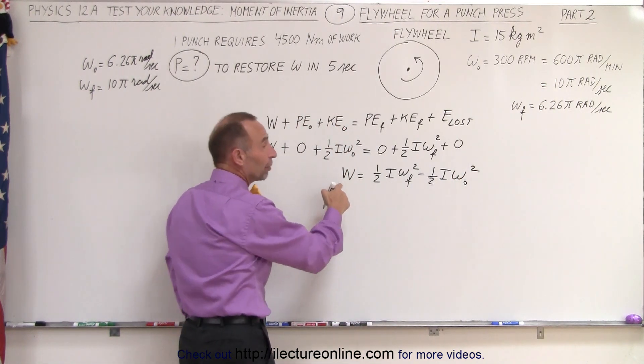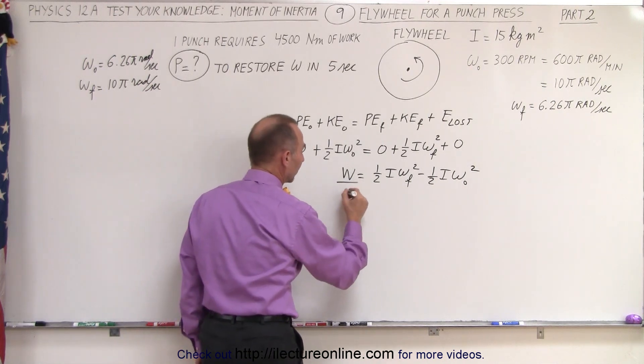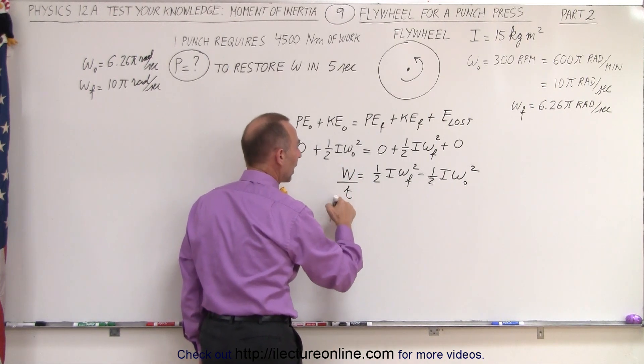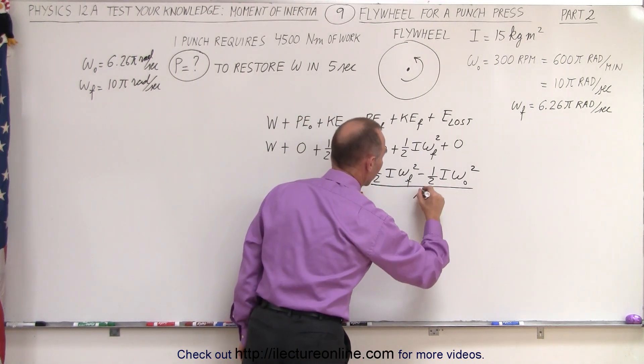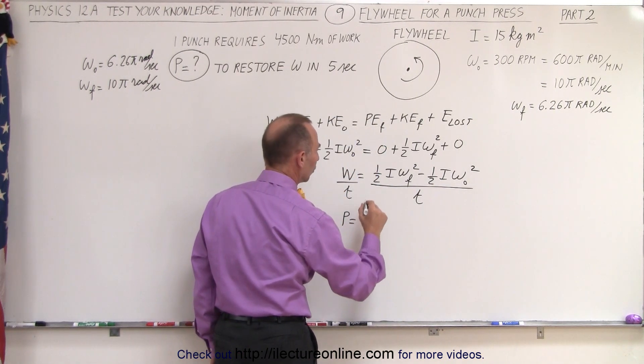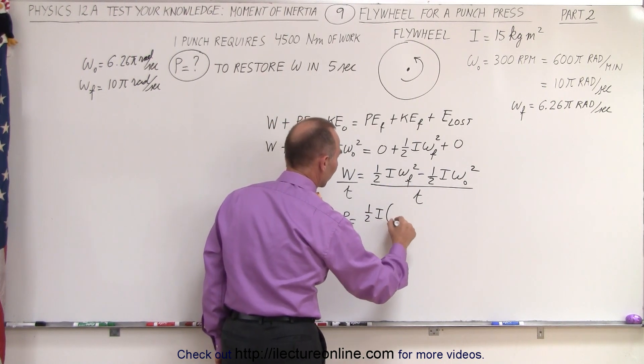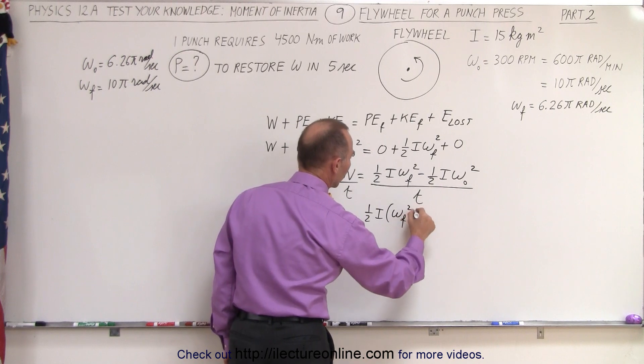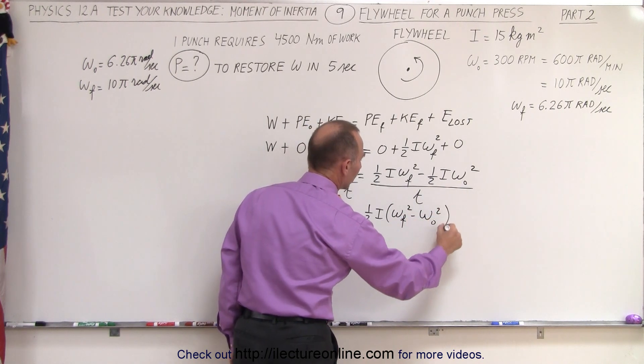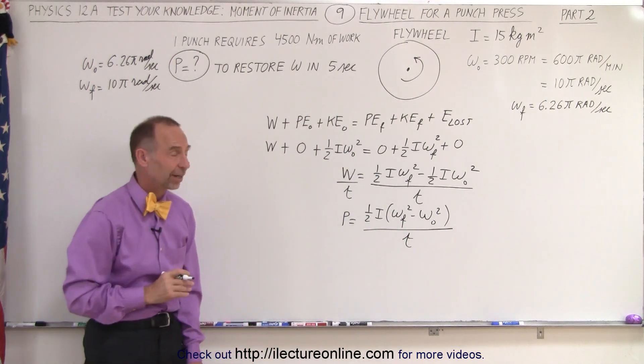And then finally, since I'm not looking for work done but I'm looking for power, I'm going to divide both sides by t, because work over time is power. Therefore power equals—I can factor out one half i—and I'm left with omega final squared minus omega initial squared, all divided by the time, in this case the time will be 5 seconds.